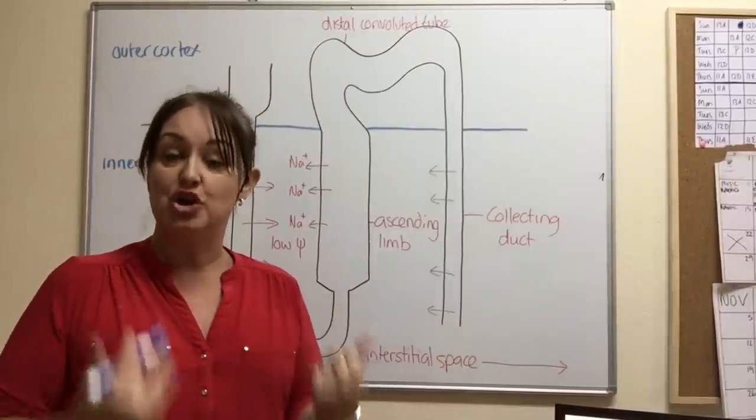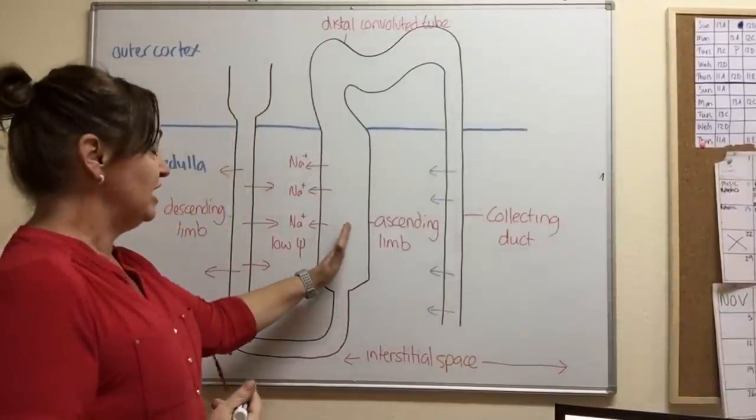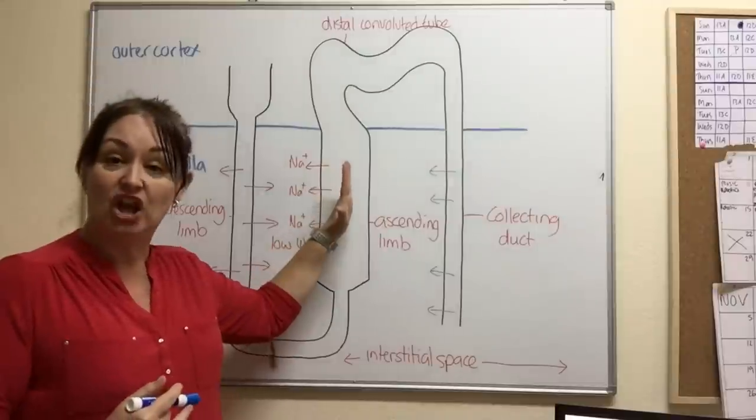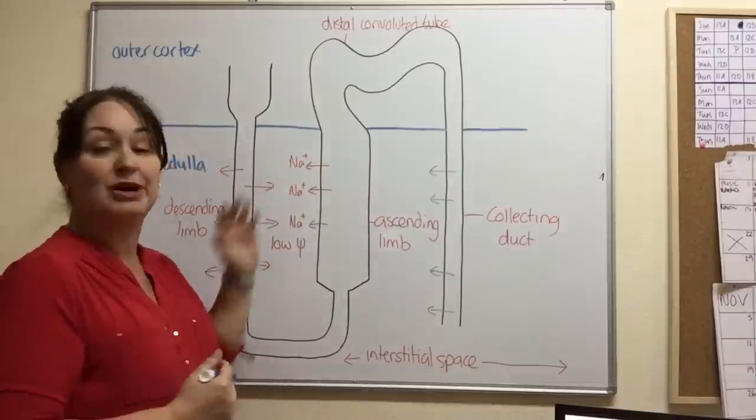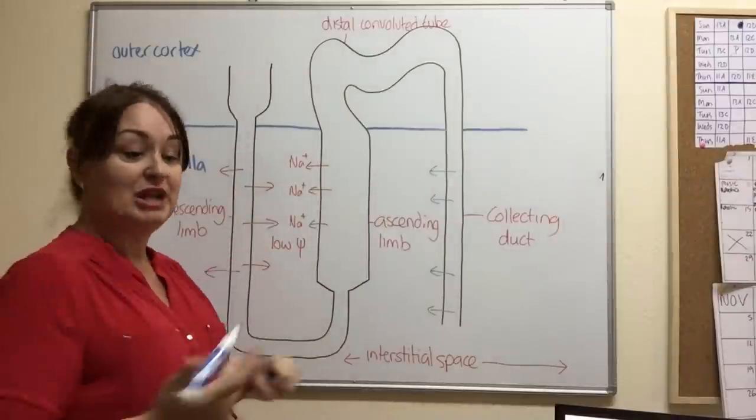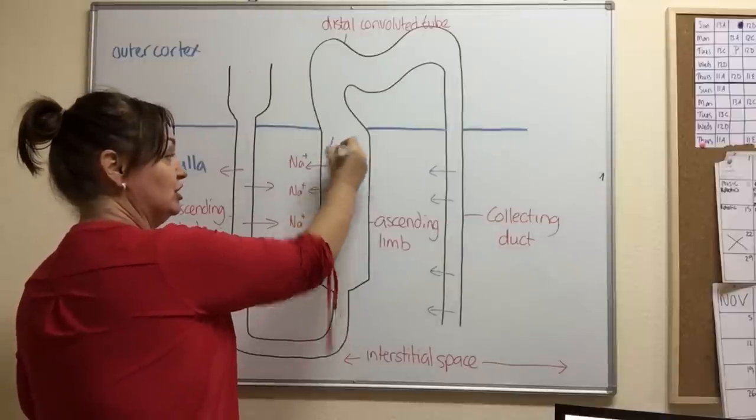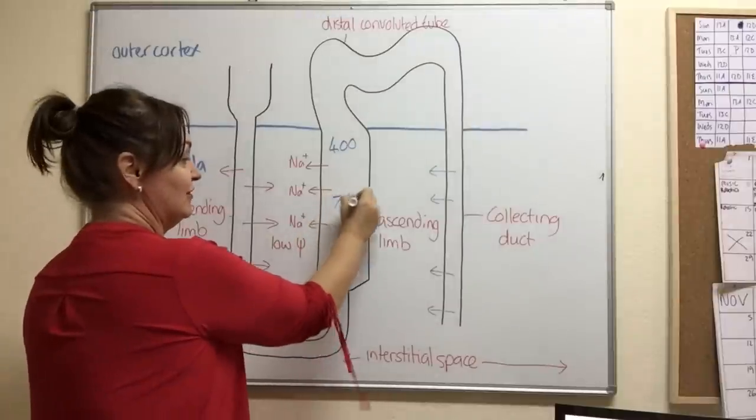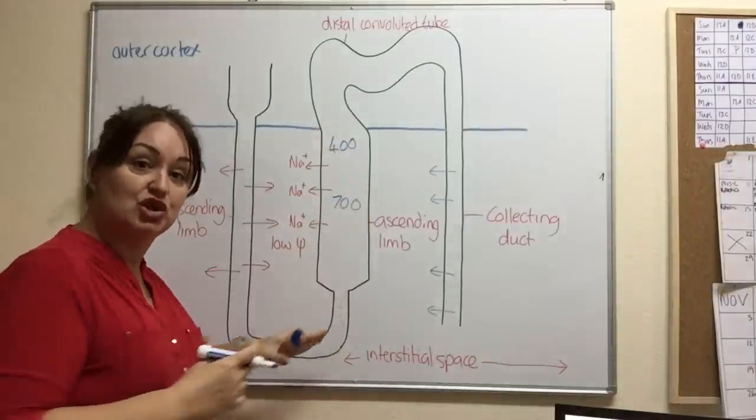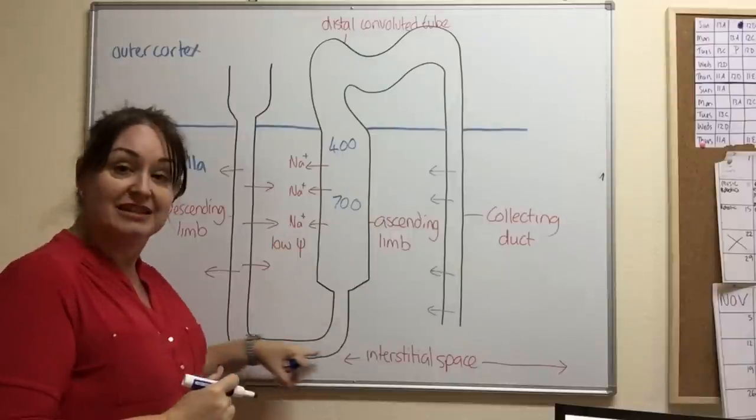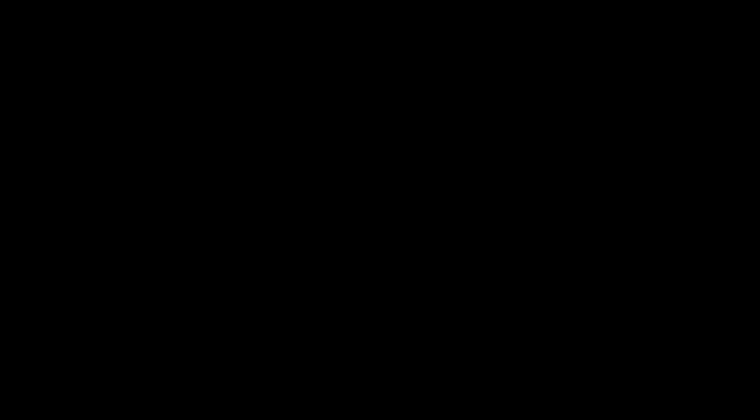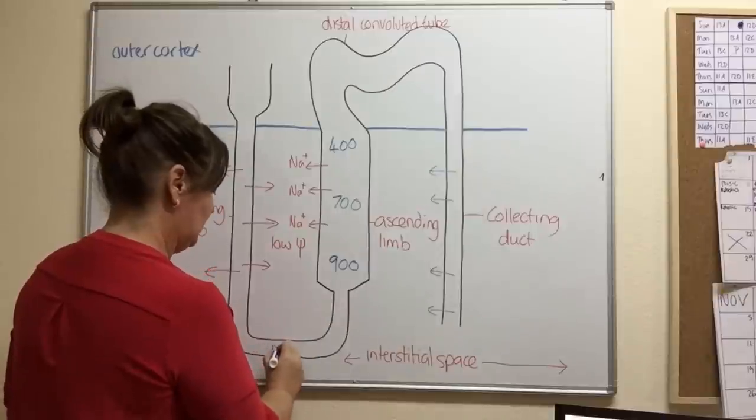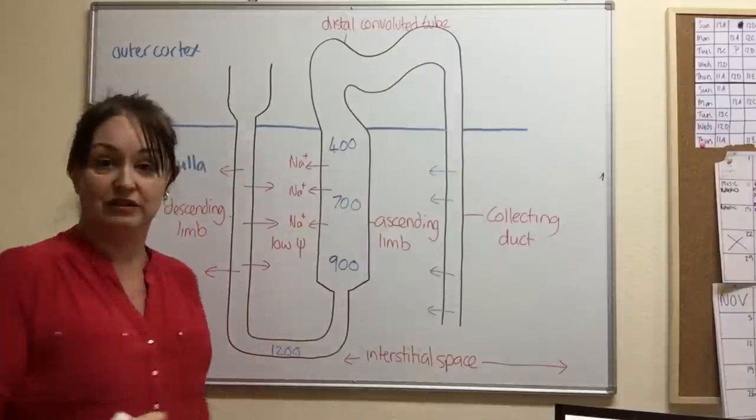So let's stick some numbers on this. If we were measuring the water potential here, clearly a lot of sodium ions have been pumped out here. So the water potential might be less here, let's call it 400, then it would be here. Let's call that 700. And again, as we move further down the tube, remember we said that at the bottom, this is where we have the lowest water potential, the most concentration of solutes. I might call that 900 and I might call that 1200 there.